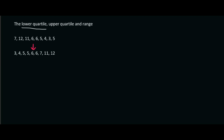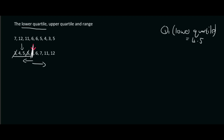Now that we have the middle, let's ignore that one. We look at the lower half. What number is the middle number in this half? If we cross off values, we're left with two numbers. All you do is add those two numbers together and divide by two. So that gives us 4.5. So we can say Q1, which stands for the lower quartile, is 4.5.